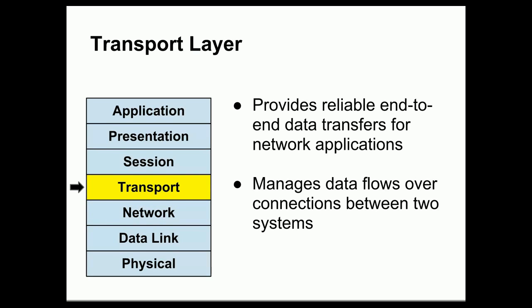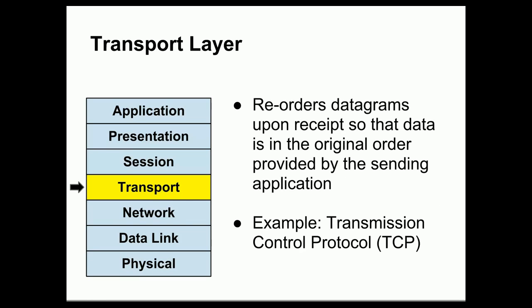The transport layer sits above the network layer and provides reliable end-to-end data transfers for network applications. It is responsible for managing data flows over connections between two systems and ensures a certain amount of reliability in communication. One thing the transport layer does is reorder datagrams upon receipt so that data is in the original order provided by the sending application, reassembling datagrams so that higher layers see the same data stream that was transmitted.